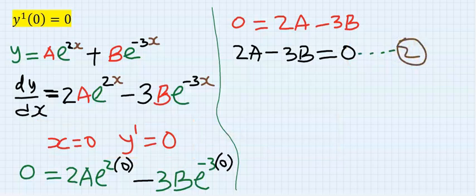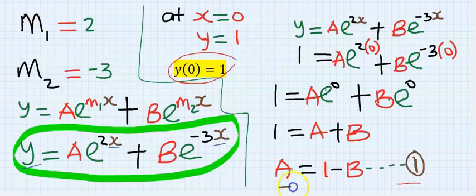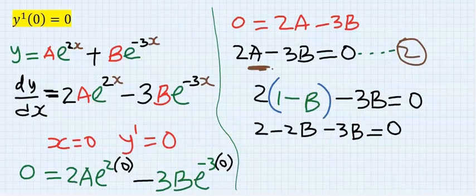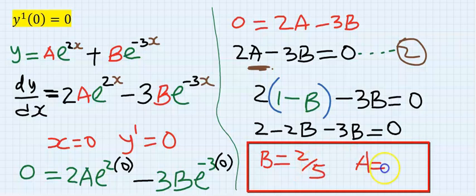Next, from equation one, replace a, which is this. So, instead of a, I will put 1 minus b. Solving this carefully, you'll see that your b is 2 over 5, and your a is 3 over 5.